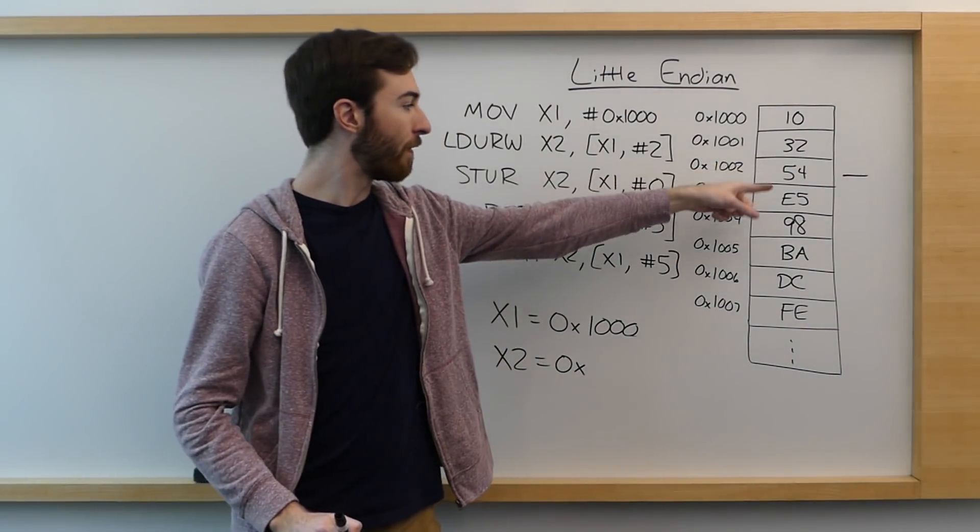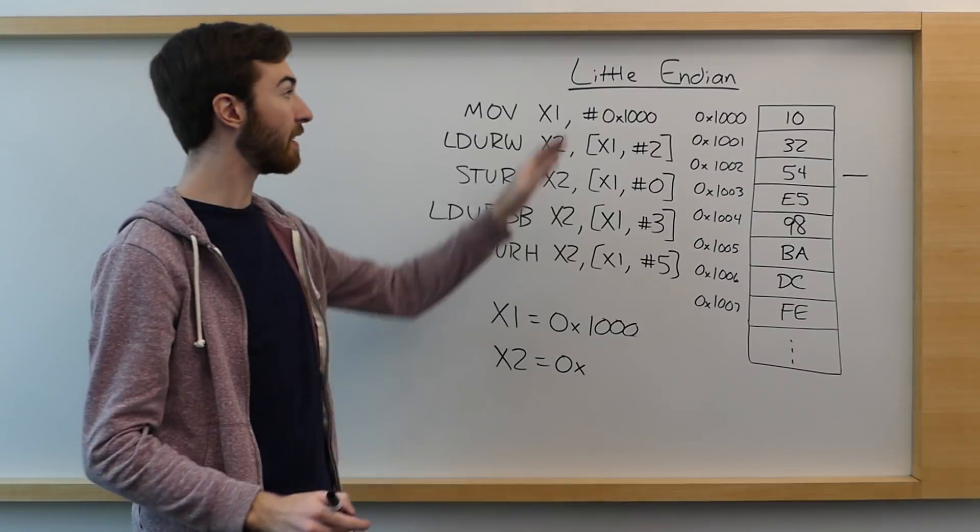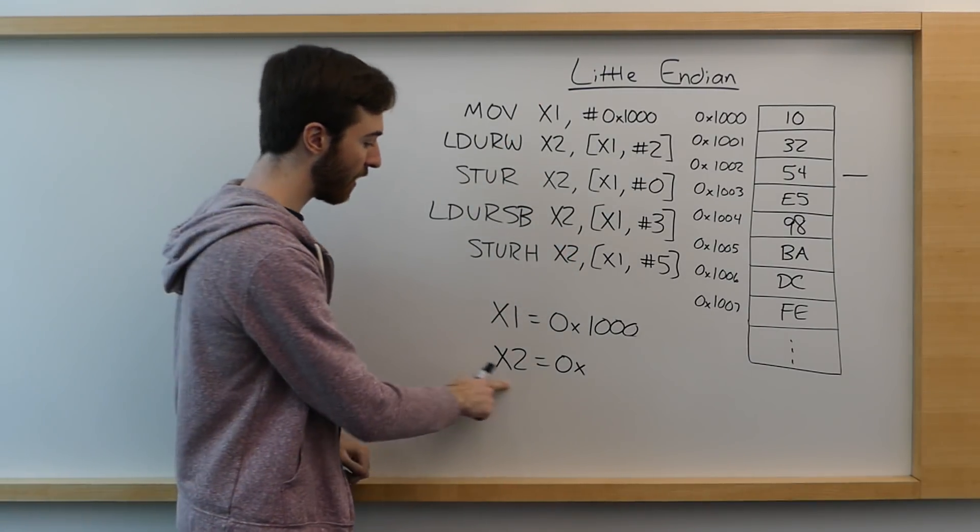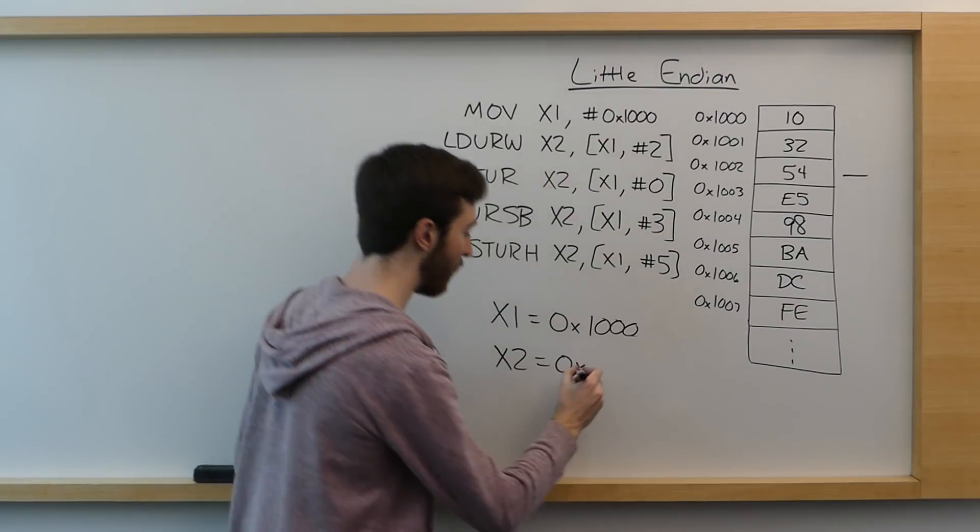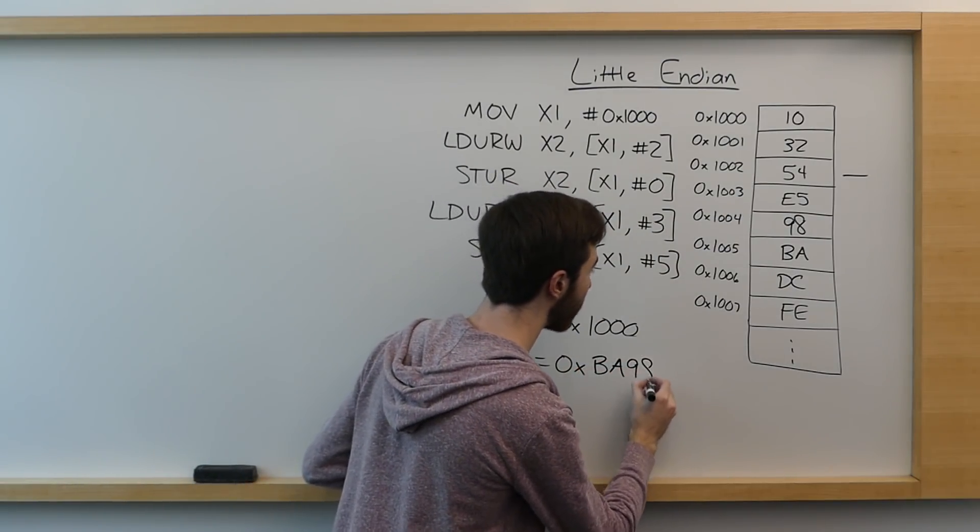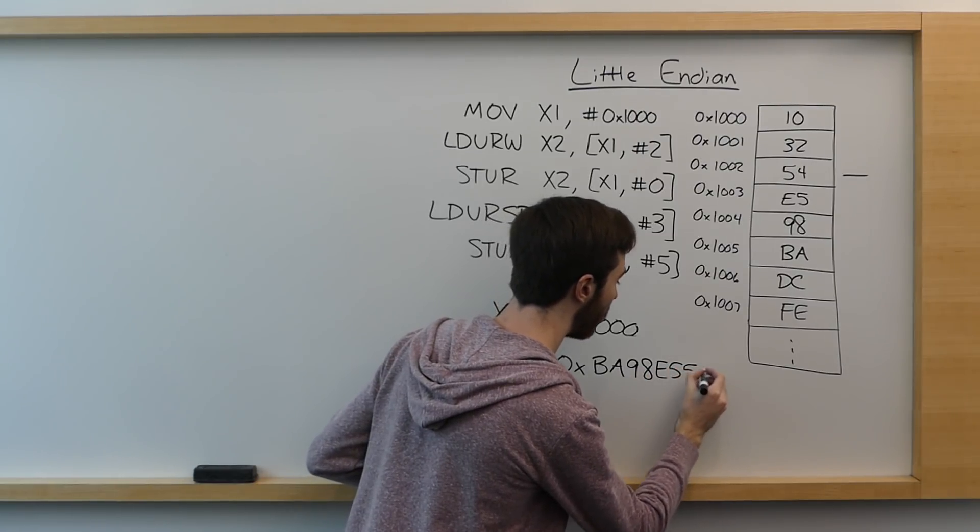This first load command loads a word, which is 4 bytes, and it starts at this memory address because it's 1000 plus 2. So it'll start at 54, read 4 bytes in, and since this is a little endian system, it reads it in backwards in a way. So X2 will end up with the value BA98E554.